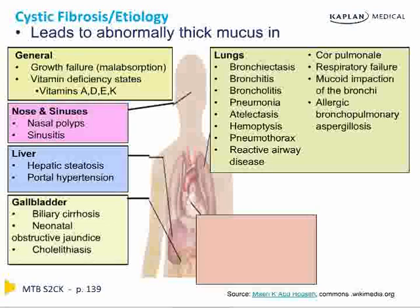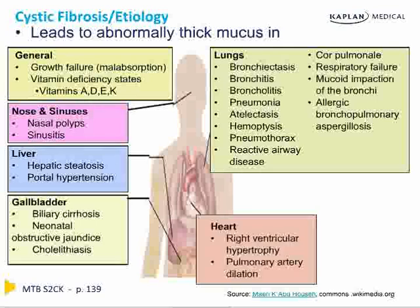Pulmonary manifestations include bronchiectasis, recurrent bronchitis and pneumonia, hemoptysis, pneumothorax, and in the worst case, pulmonary hypertension and right-sided heart failure. Patients with CF also have higher rates of ABPA. In the heart, right ventricular hypertrophy and pulmonary artery dilation can occur if the patient's lung disease reaches end stage.